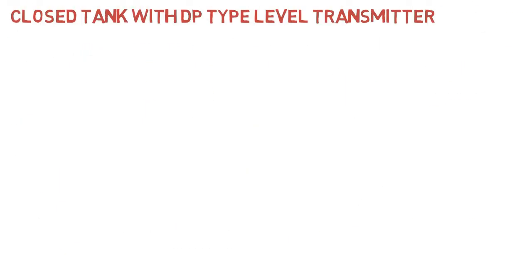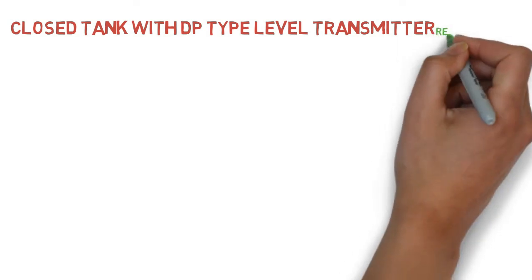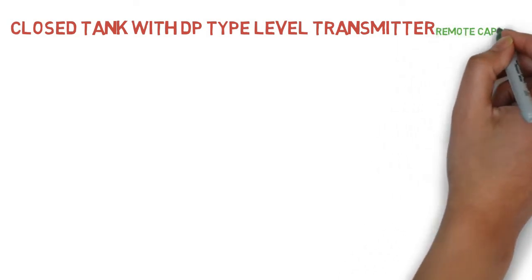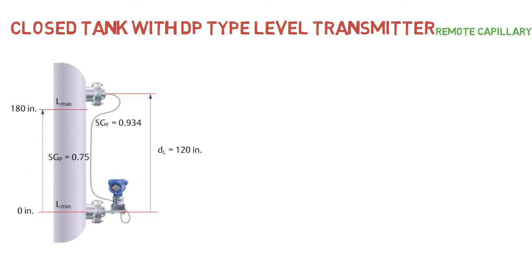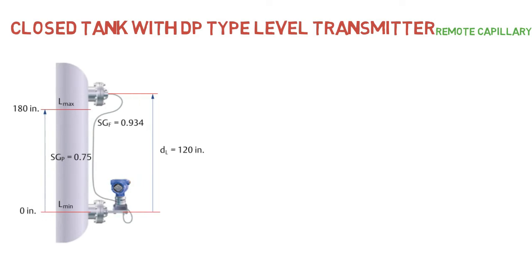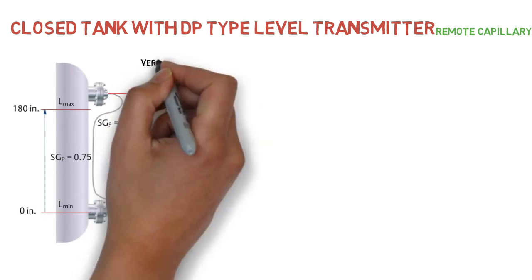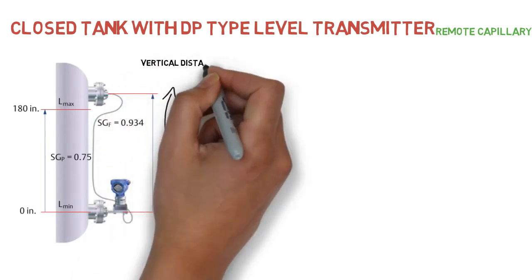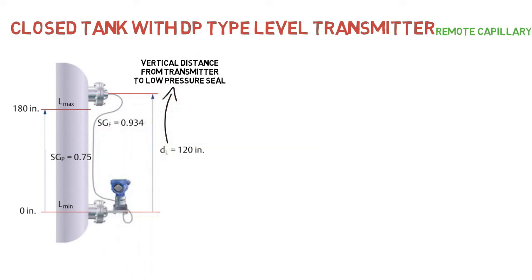Closed tank with DP type level transmitter, remote capillary. Vertical distance from transmitter to low pressure seal.